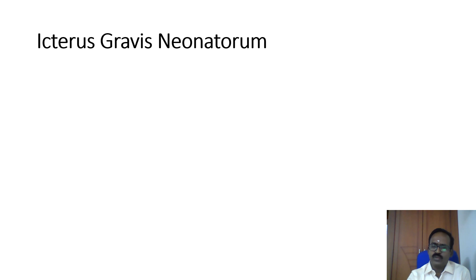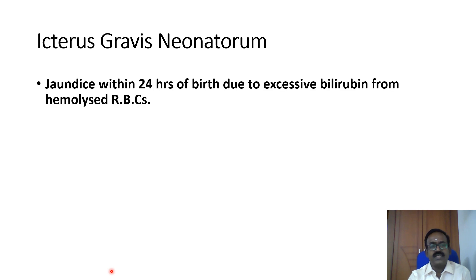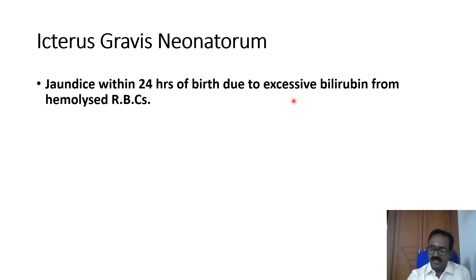Icterus gravis neonatorum occurs when the mother is Rh negative and the fetus is Rh positive. Icterus means jaundice, and it appears within 24 hours of birth due to excessive bilirubin from hemolyzed RBCs caused by the anti-D antibody from the mother's plasma. This is pathological jaundice.